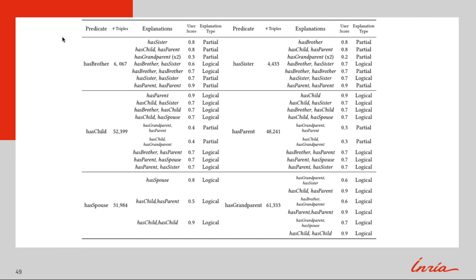This table gives a breakdown of the French Royalty 200K. We can see the predicate along with the number of triples with that predicate. Also shown is each possible explanation with its associated user score normalized between 0 and 1. The explanation type column determines whether an explanation is logical or partial. We define a logical explanation as one that is always true. A partial explanation is one that is only true with additional information such as gender — for example, using has-sister to explain the has-brother predicate without knowing the gender. In the French Royalty 200K, we ensure partial explanations are not generating false triples by first verifying if the resulting generated triple already exists in the graph.